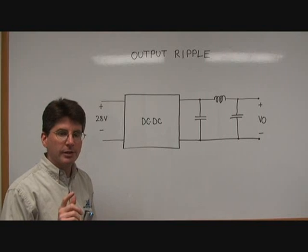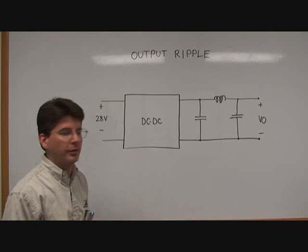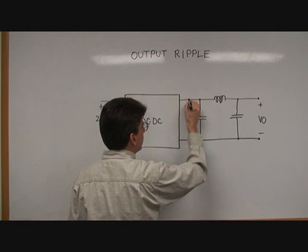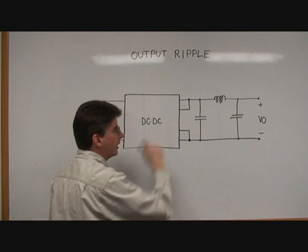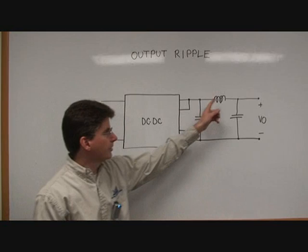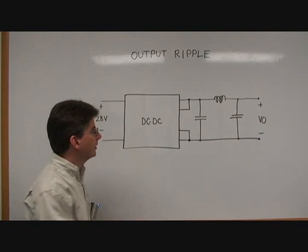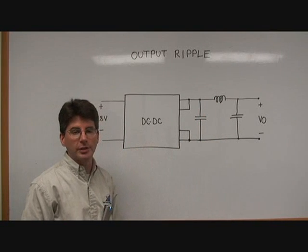The remote sense lines need to be connected this side of this extra LC. Otherwise the LC can affect the internal control loop of the DC-DC converter.